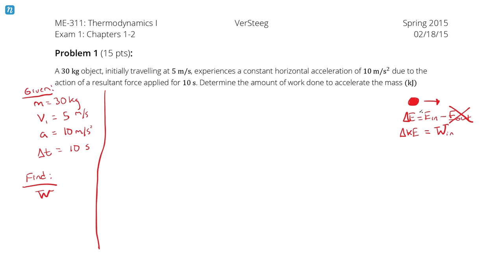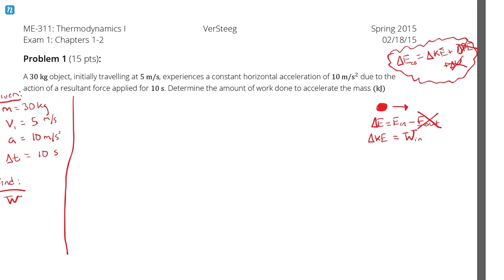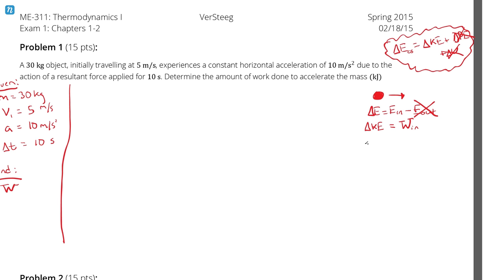The change in energy of a closed system could be kinetic energy, potential energy, or internal energy. In this case I'm ignoring potential energy — it's a horizontal acceleration — and ignoring internal energy changes. That leaves us with just kinetic energy. It's a closed system because the mass of our object doesn't change. So the change in kinetic energy equals work in.